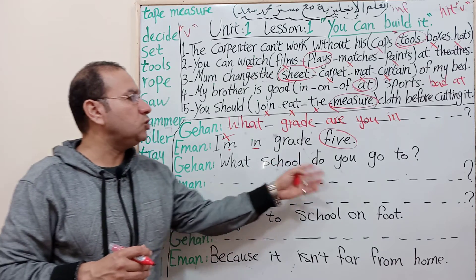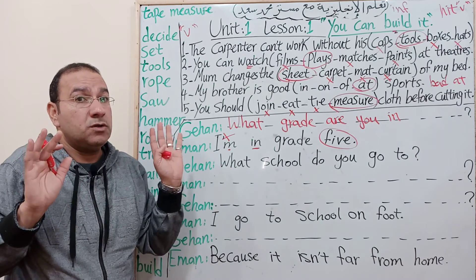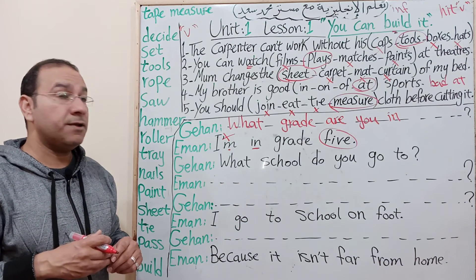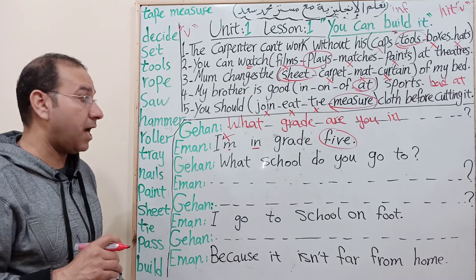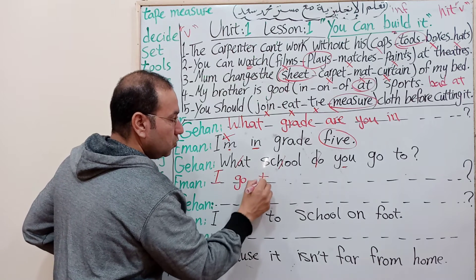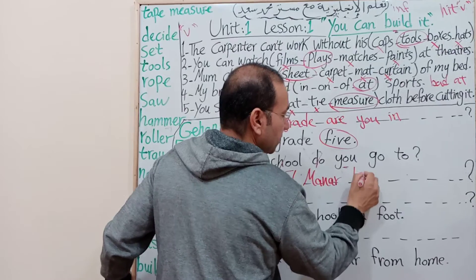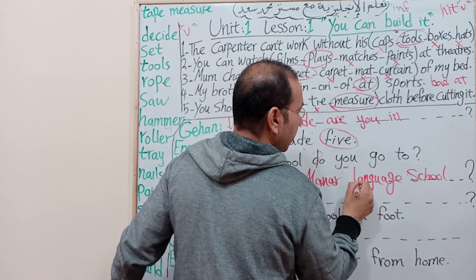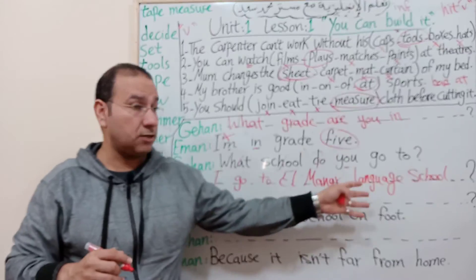For 'What school do you go to?' - identify the question word: what, where, how, who. Translate it - 'which school do you go to?' There's no auxiliary in the answer 'I go to school,' so we bring one from outside: do, does, or did. The verb 'go' is the base form, so we use 'do.' Short answer: 'I go to Al-Manar Language School.'